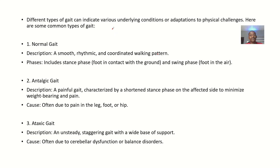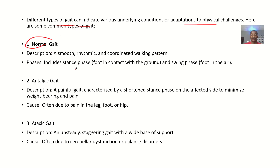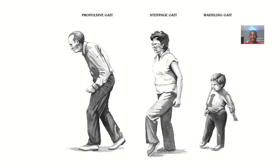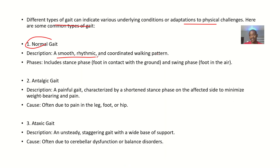First of all we start with the normal gait. Different types of gaits can indicate various medical conditions, or it could mean that someone is trying to adapt to physical challenges — like somebody whose leg is shorter than the other. For the normal gait, it's a smooth, rhythmic, and coordinated walking pattern. It includes the stance phase, which is the foot in contact with the ground, and the swing phase, which is the foot in the air.